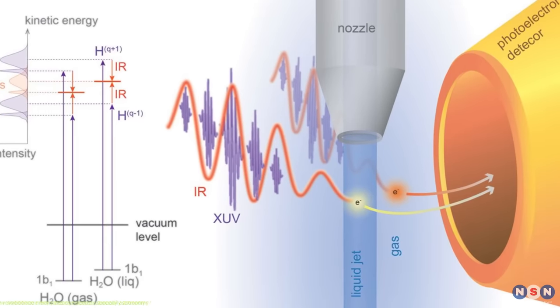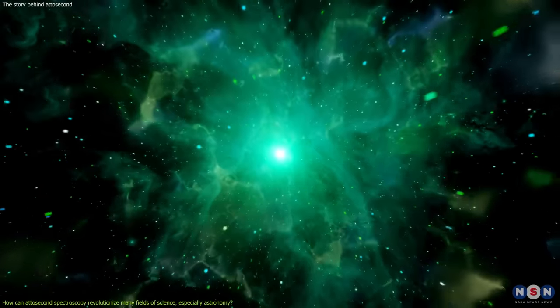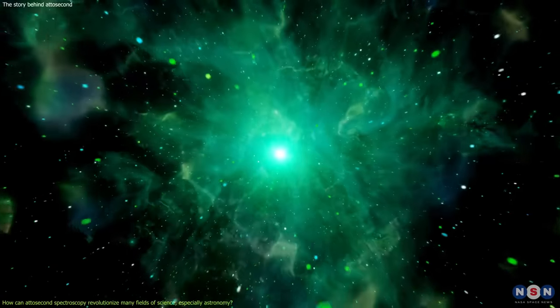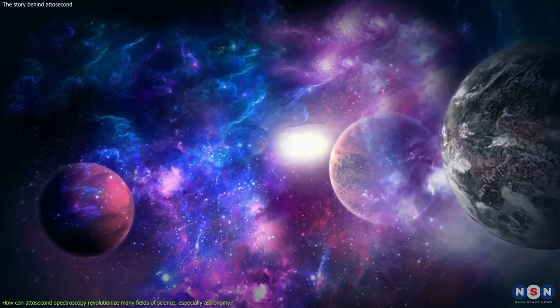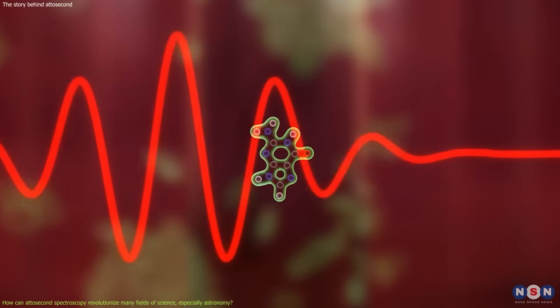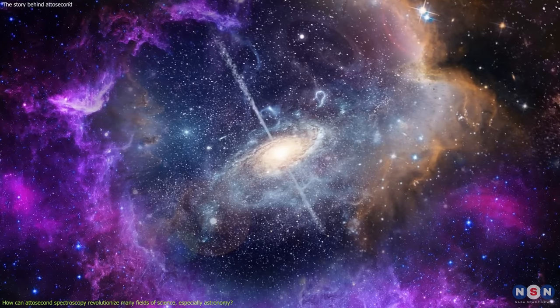Attosecond spectroscopy is not only useful for studying atoms and molecules, but also for studying larger and more complex systems, such as stars, planets, and galaxies. By using attosecond pulses of light to probe their spectra and emission lines, we can gain new insights into their structure and evolution.